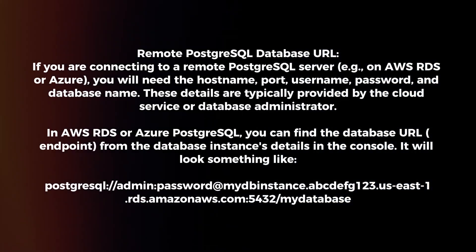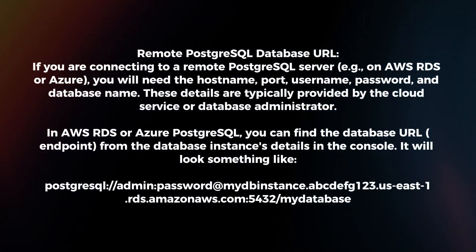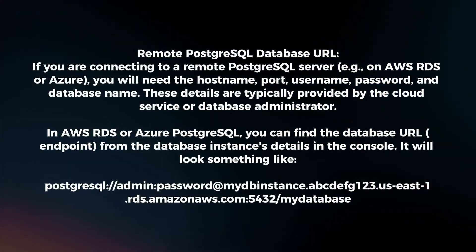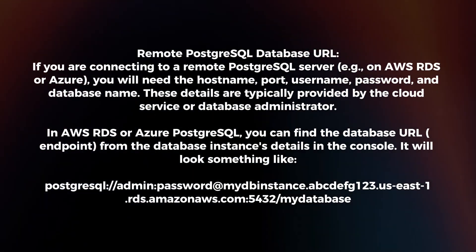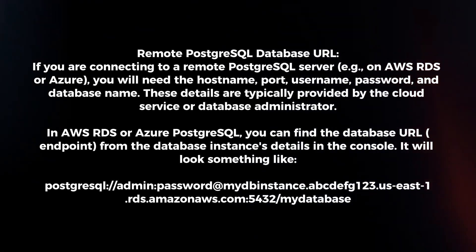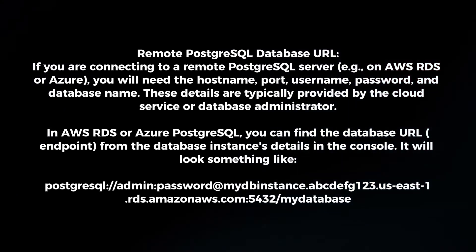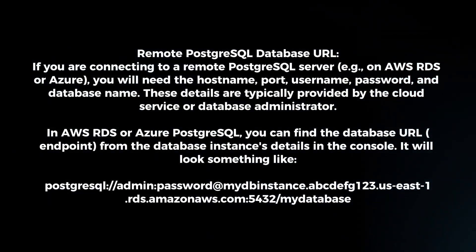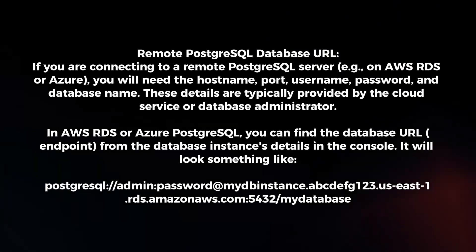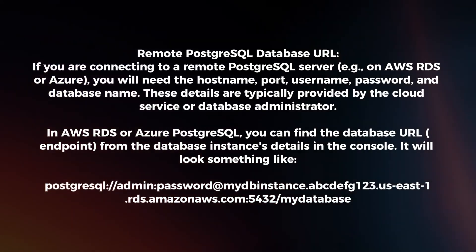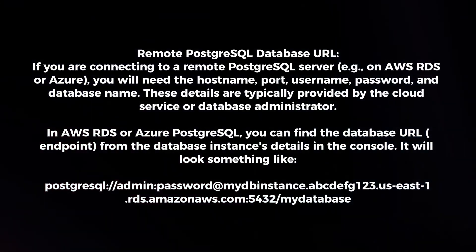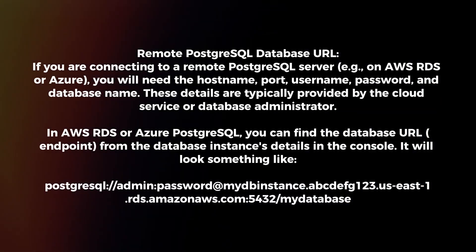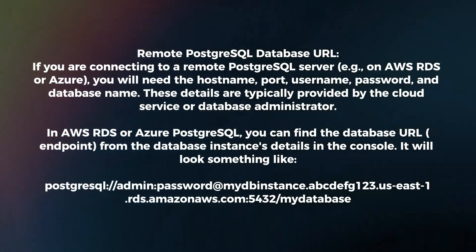Remote PostgreSQL database URL: if you are connecting to a remote PostgreSQL server, you will need the hostname, port, username, password, and database name. These details are typically provided by the cloud service or database administrator. In AWS RDS or Azure PostgreSQL, you can find the database URL from the database instance's details in the console.